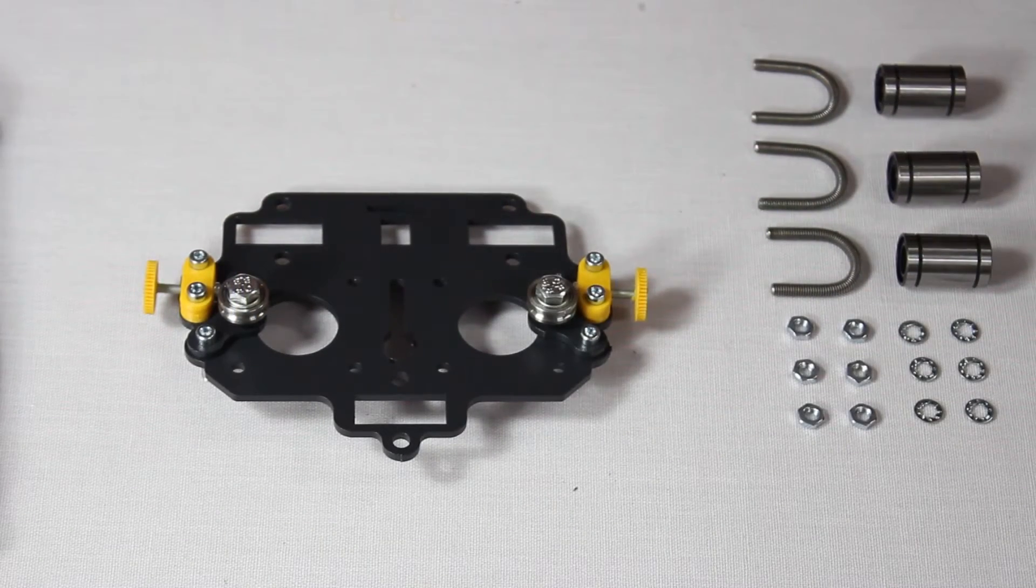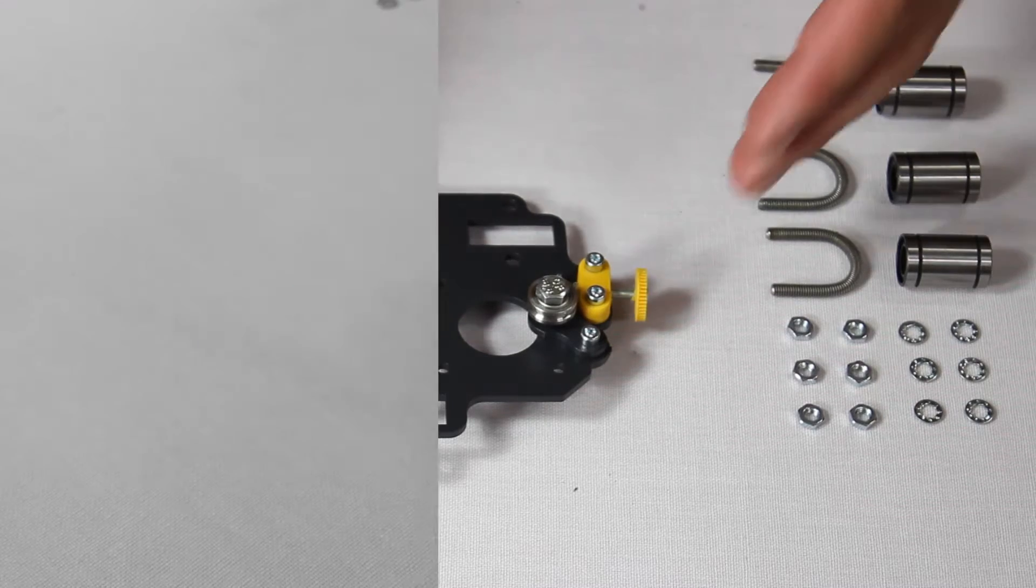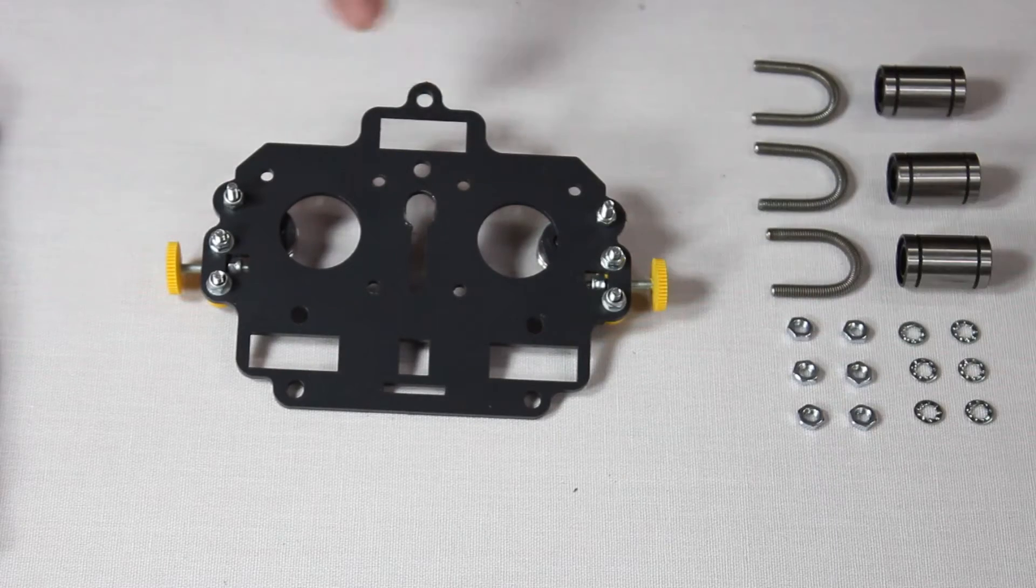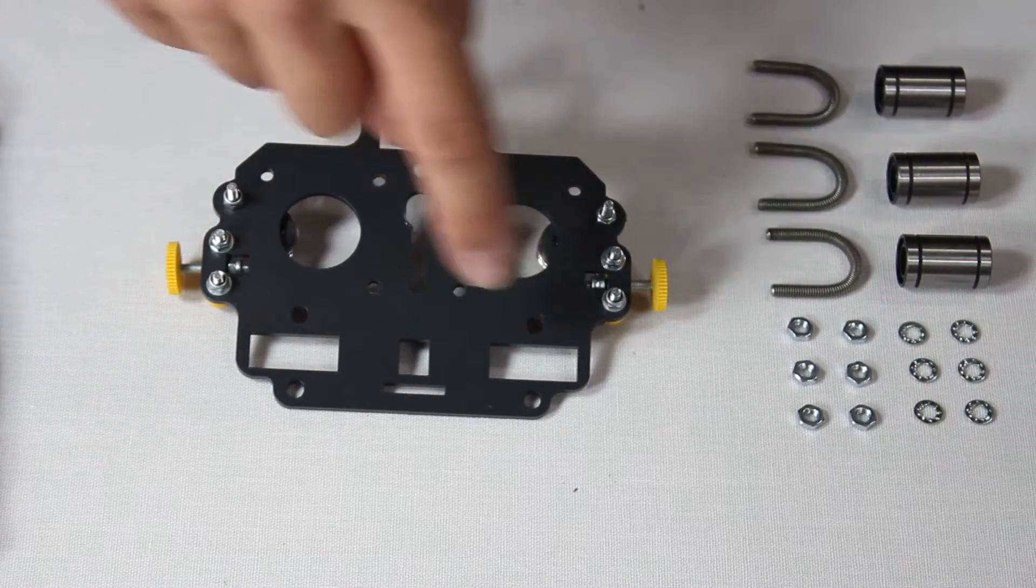The following step is to clamp in some linear bearings. This is identical to when we clamped in the linear bearings to the table structure before. You just have to be sure the orientation is always correct.